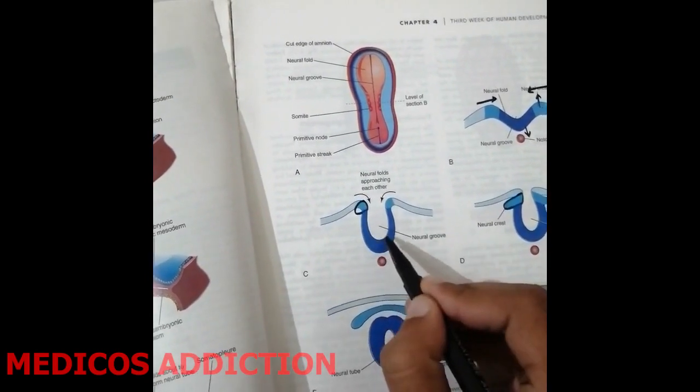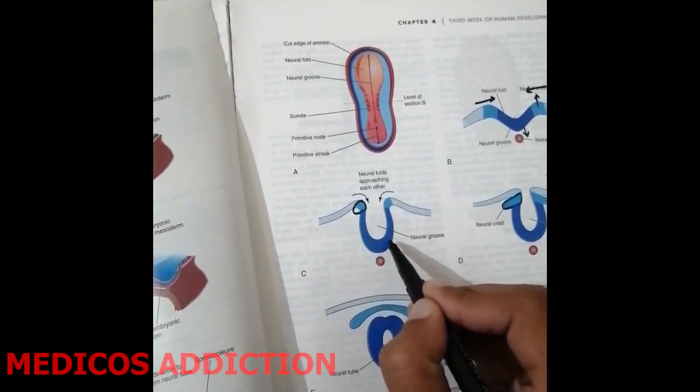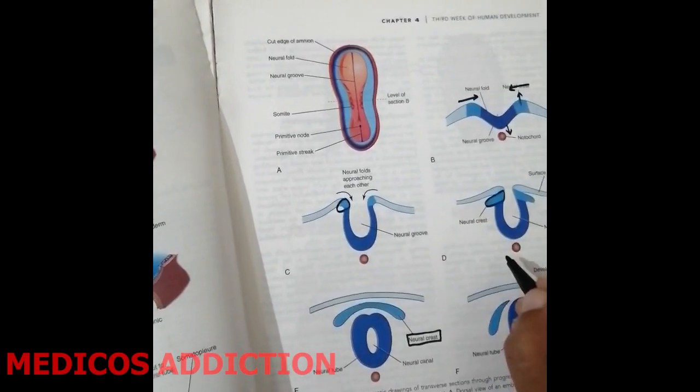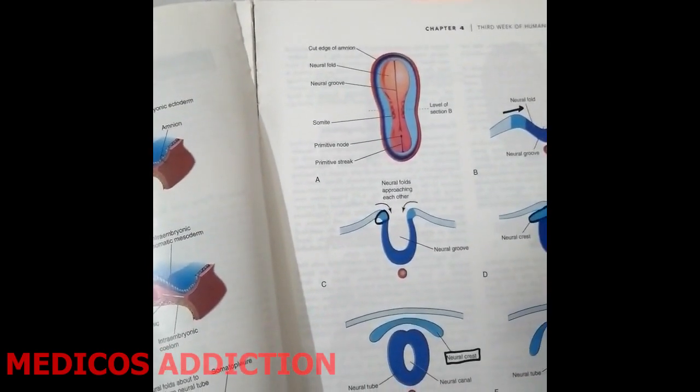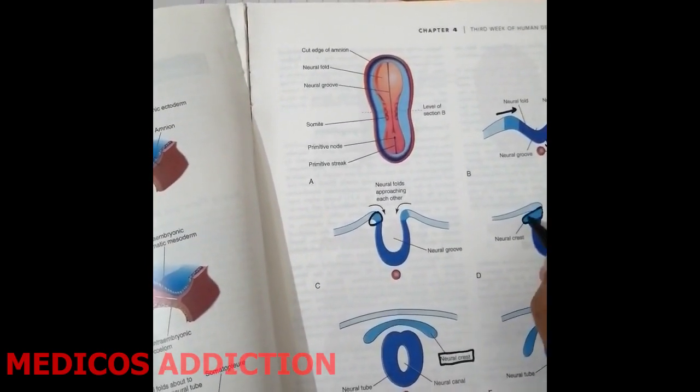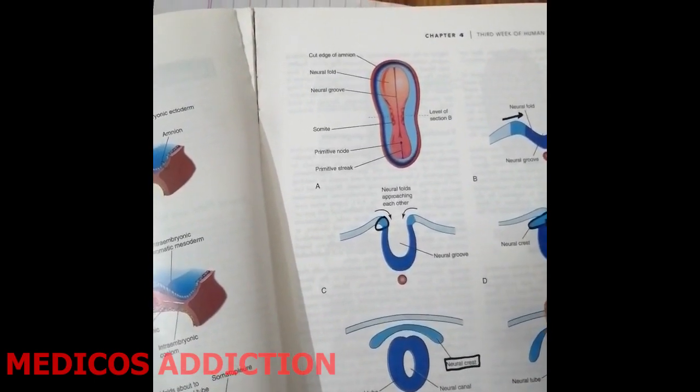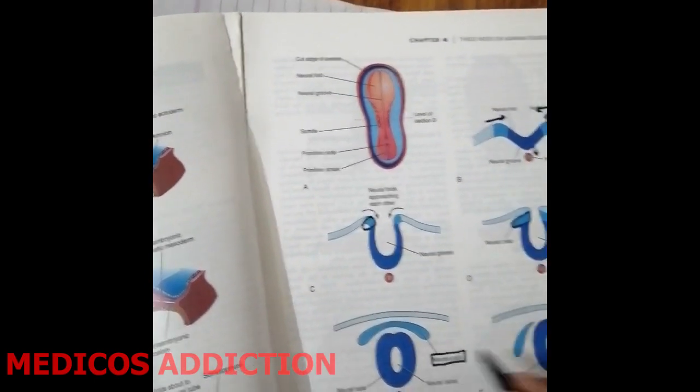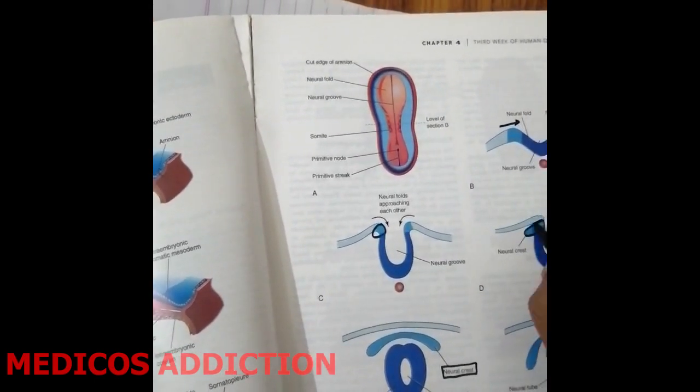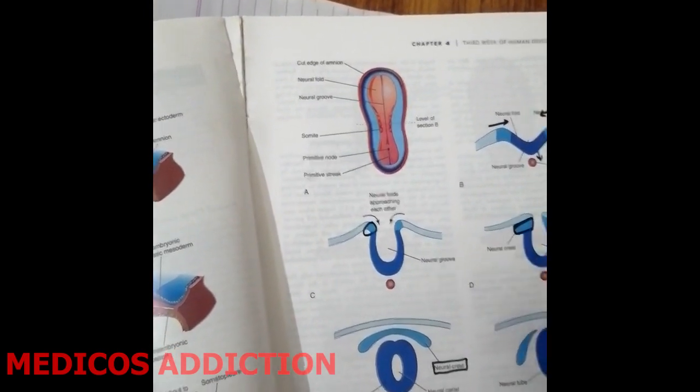The middle portion depresses further and forms the neural groove. The cells which are present on the inner margin of the fold of neural ectoderm form the neural crest cells. These are the forming neural crest cells in this diagram.